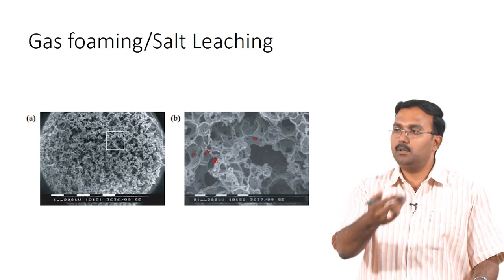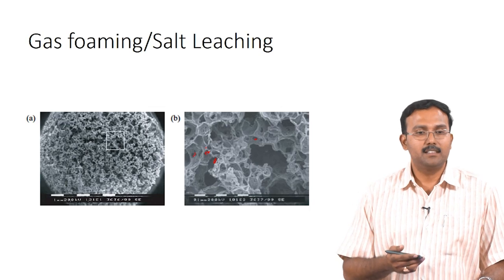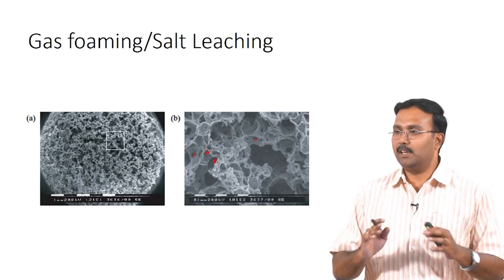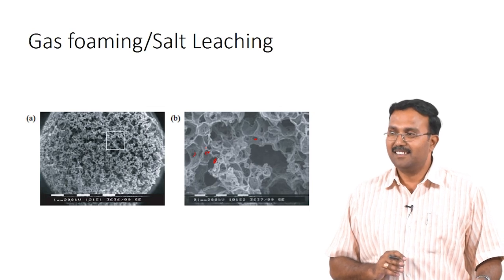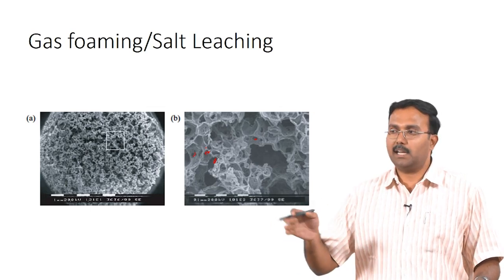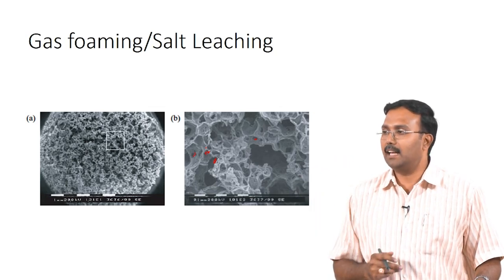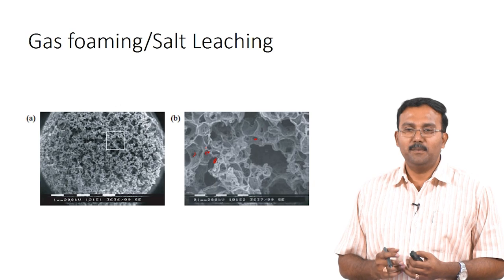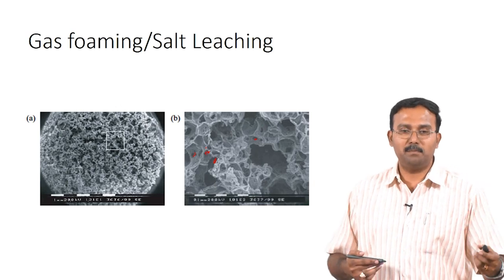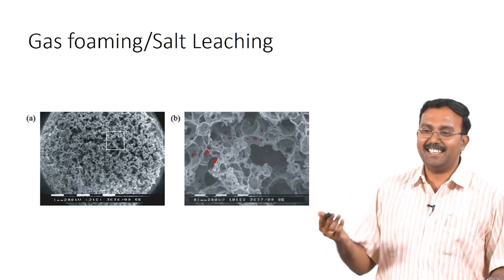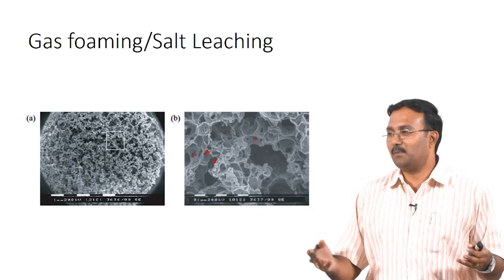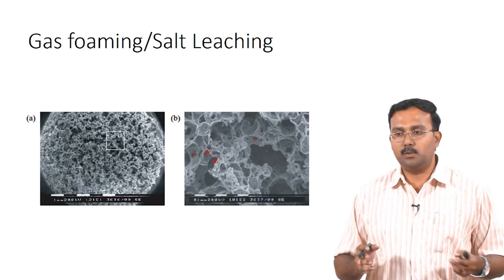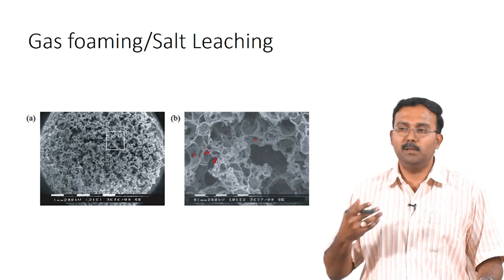Compared to salt leaching, the disadvantage of gas foaming is that you have reasonable control over the porosity, but not really the pore size and distribution — it is not very well organized. Microspheres can also be used in tissue engineering — people have prepared microspheres primarily for entrapment of enzymes and other things. However, people do not generally use just a microsphere by itself nowadays because that does not resemble what your ECM is, so people use microspheres along with other materials, where the microspheres can be used to load molecules.